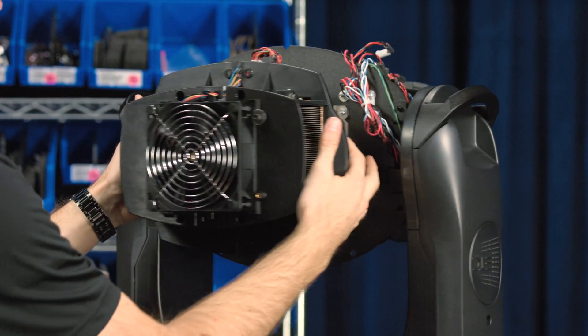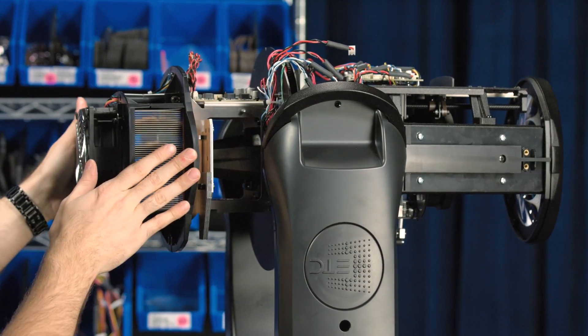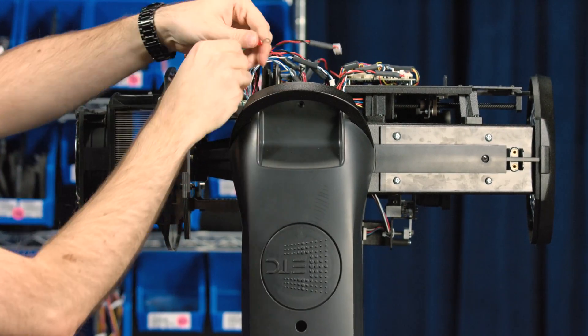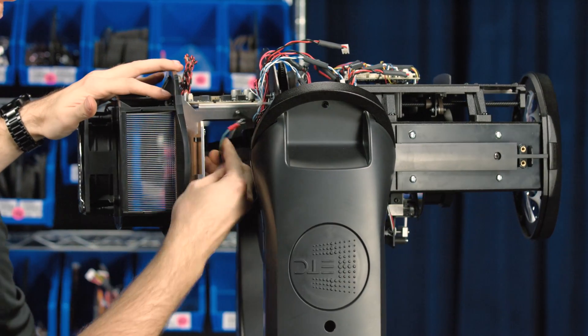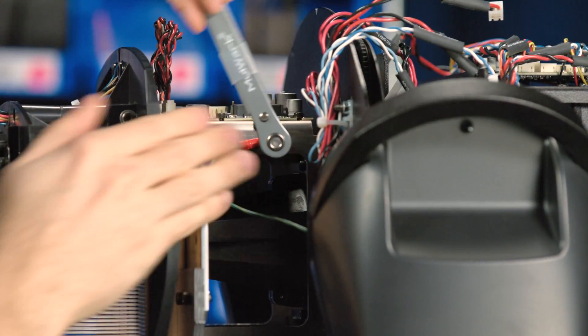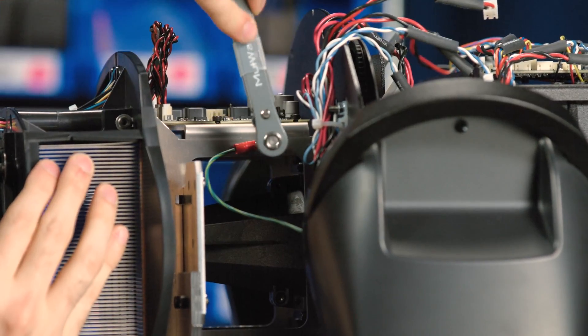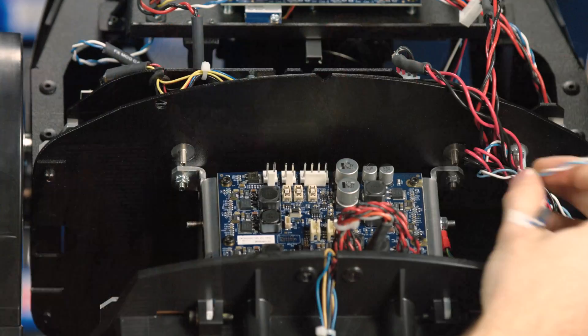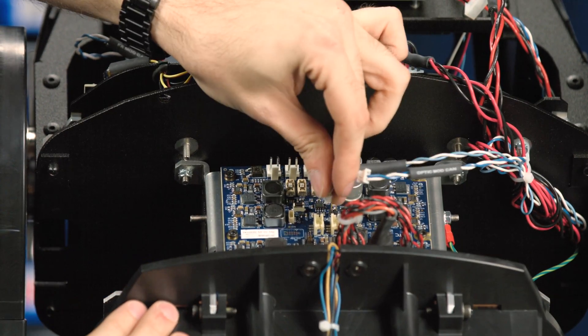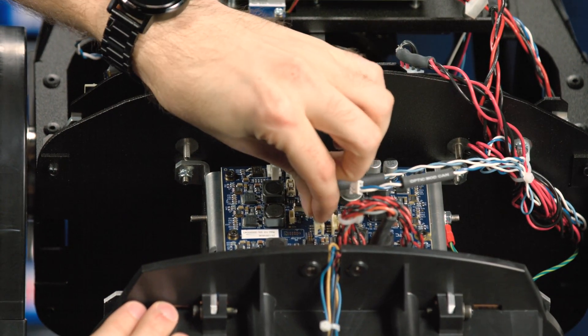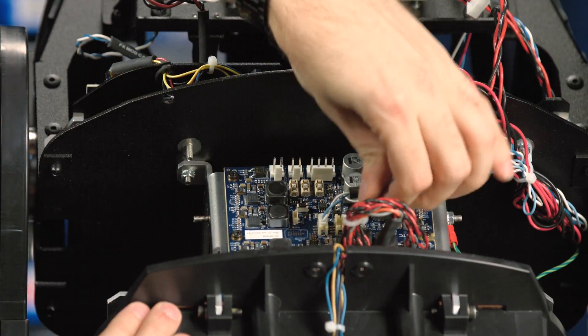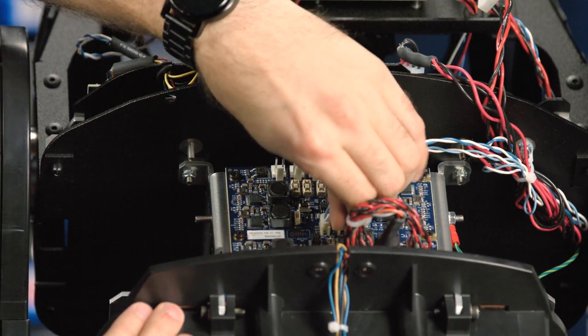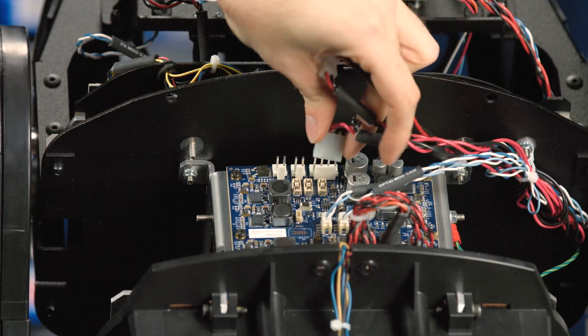Now that the four nuts are tightly secured to the unit, we'll want to reattach our wiring. We can start with the ground wire, and then finally, we'll reconnect the two canvas wires and then the three power wires.